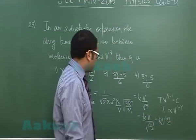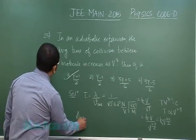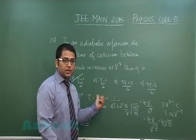And the correct option now would be the relaxation time is directly proportional to V raised to the power 1 plus gamma by 2, which is option number 1. So question number 25 had correct option as the first option.